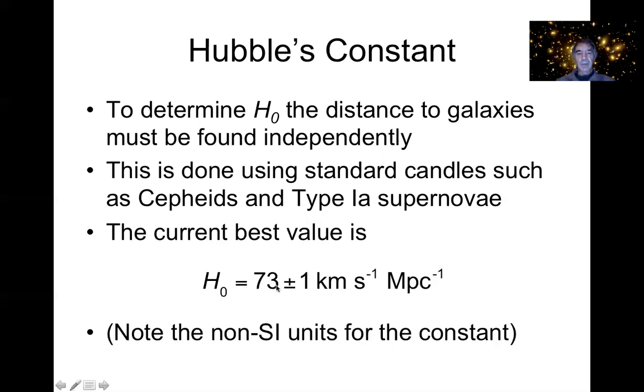So if you make a plot of the recessional velocity in kilometers per second against the distance to a galaxy in megaparsecs and look at the slope, that's how you determine Hubble's constant. And the current best value now is 73, plus or minus 1. So it's actually now incredibly accurately known.